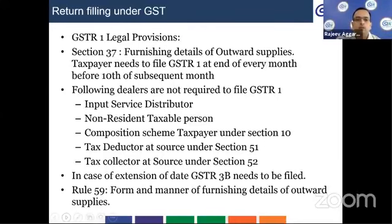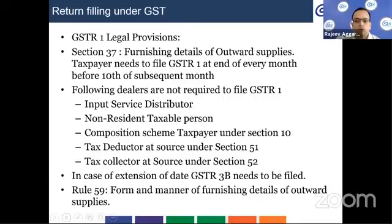A normal taxpayer and a casual taxpayer are required to file GSTR1. They are also required to file GSTR2 and GSTR3. GSTR3B is to be filed by normal taxpayers and casual taxable persons. So GSTR1, 2, 3, and 3B are to be filed by normal and casual taxable persons. Rule 59 talks about the forms and manner of furnishing details in the output supplies return. The legal provisions are Section 37 and Rule 59.